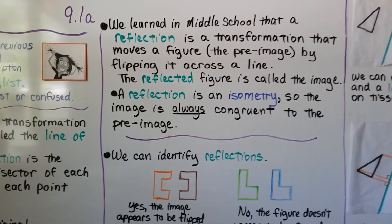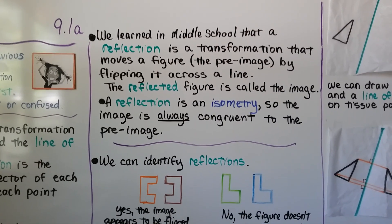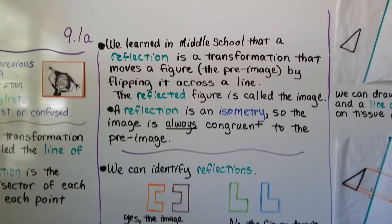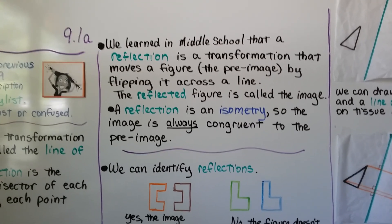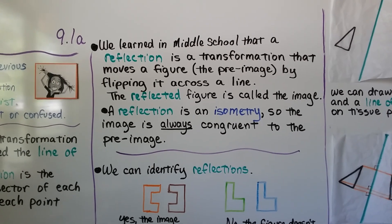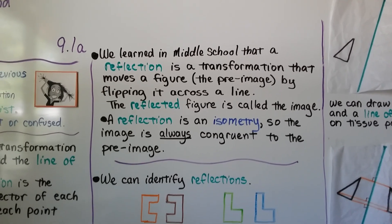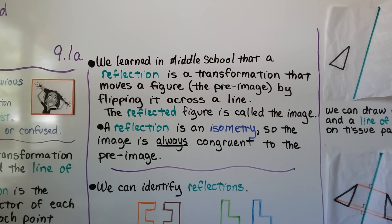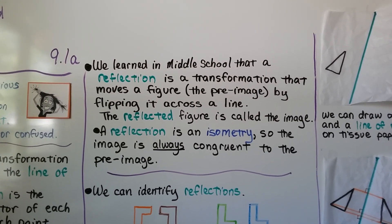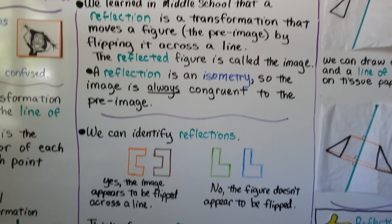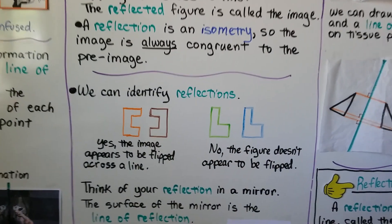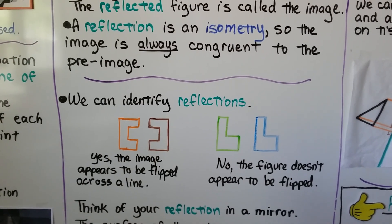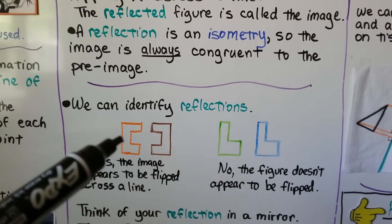We learned in middle school that a reflection is a transformation that moves a figure — the pre-image — by flipping it across a line, and the reflected figure is called the image. A reflection is an isometry, so the image is always congruent to the pre-image. We can identify reflections using these examples: we have an orange figure and a brown figure.